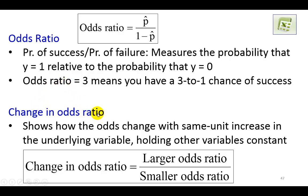Changing odds, though, is the ratio of two odds ratios, and it's calculated as the larger ratio divided by the smaller one. And it's going to show us how the odds change with a same-unit increase in the underlying variable, in the explanatory variable. Now, one interesting fact about changing odds ratio, though, is that if this calculates to be 1, then it's telling us that changing the values of the explanatory variable is not going to alter the probability of success.